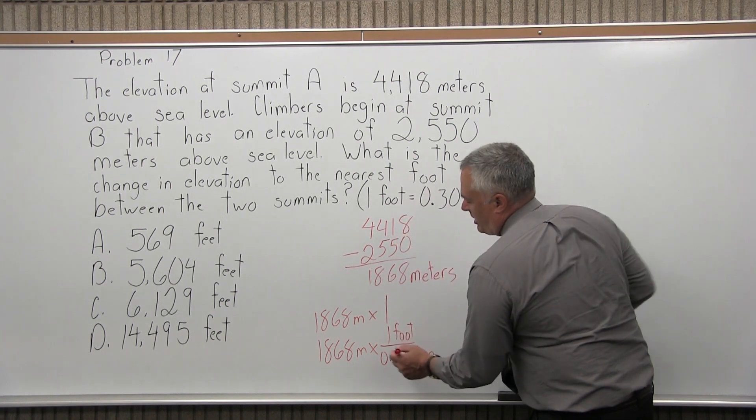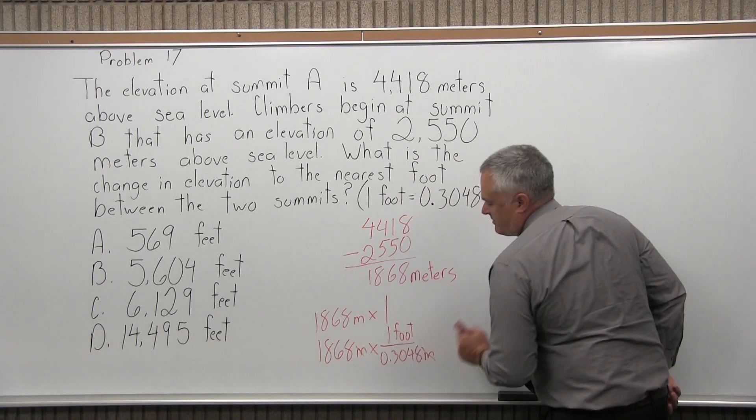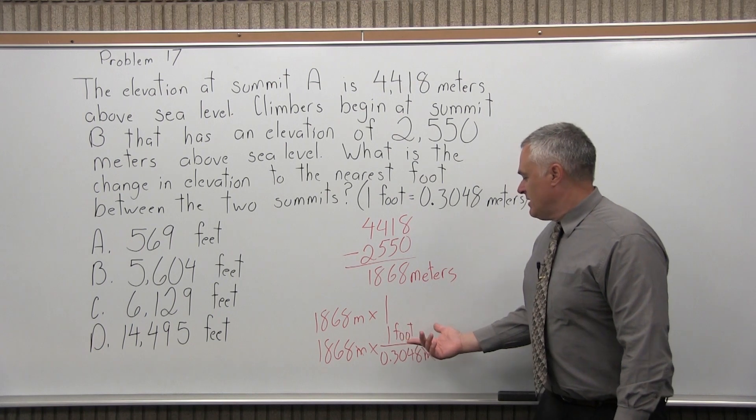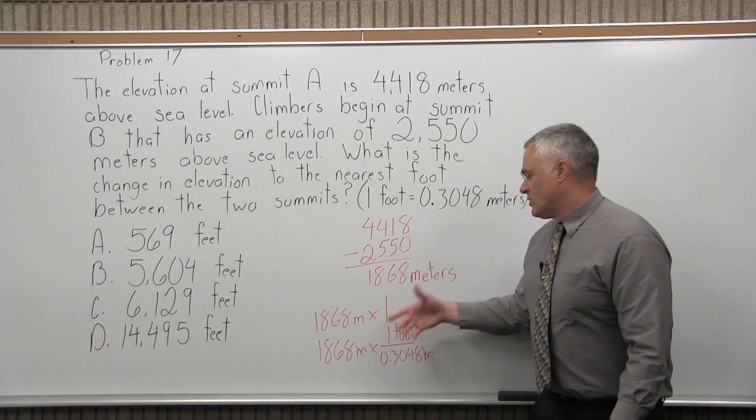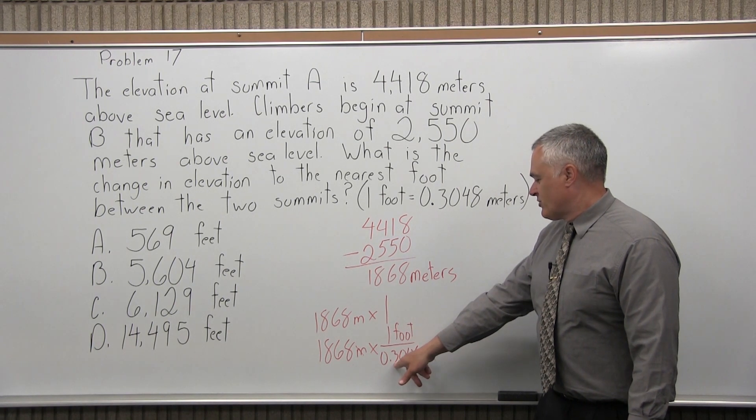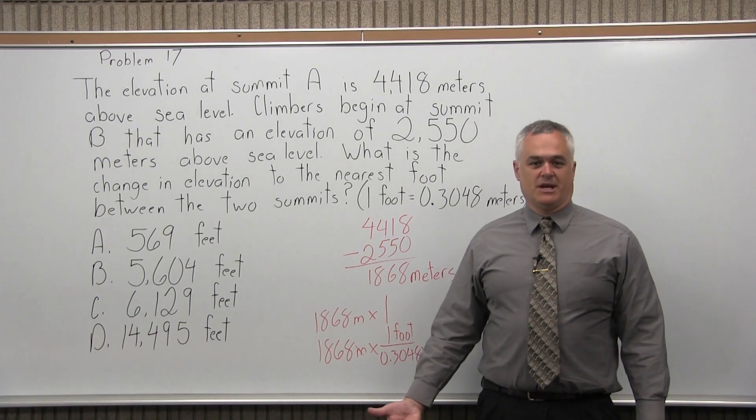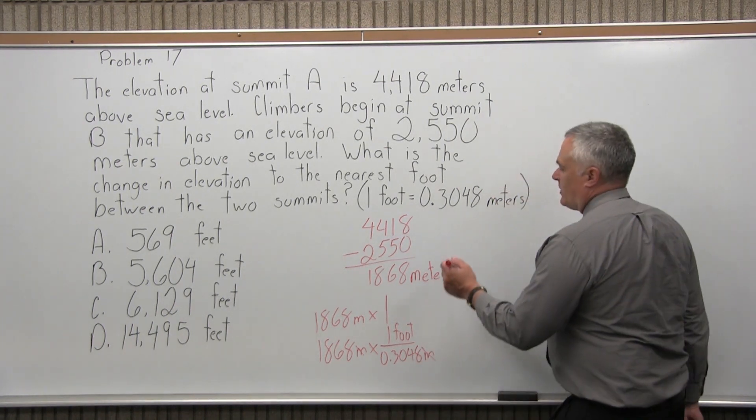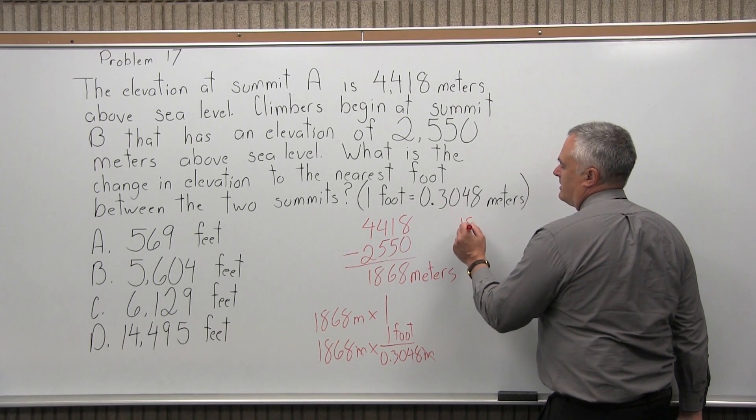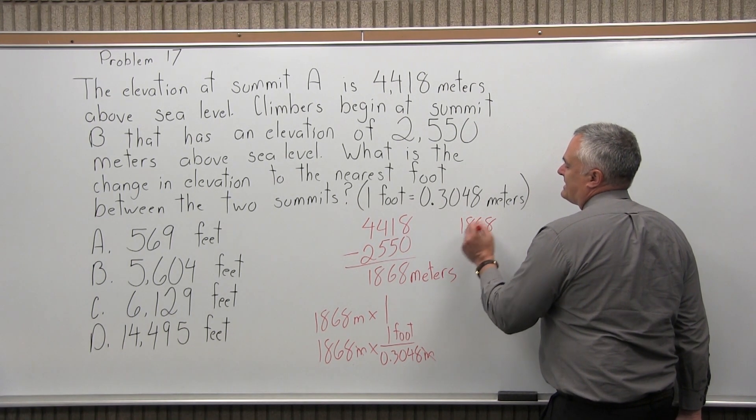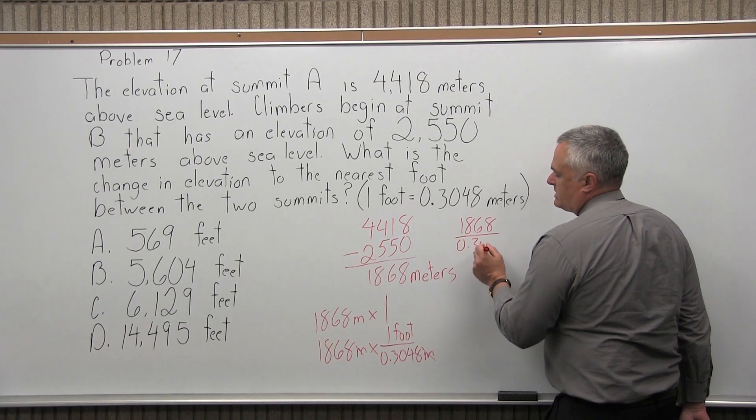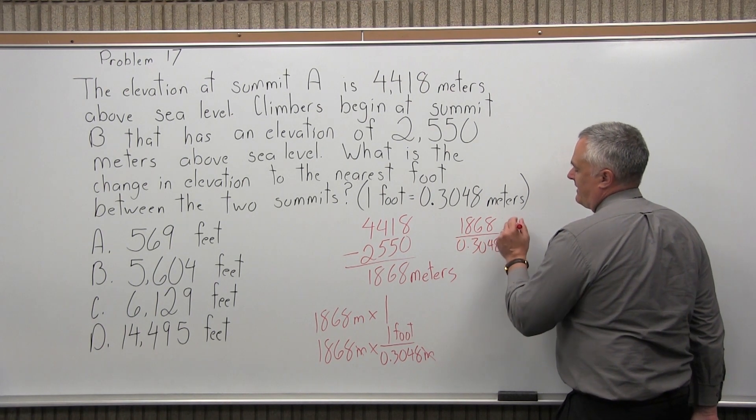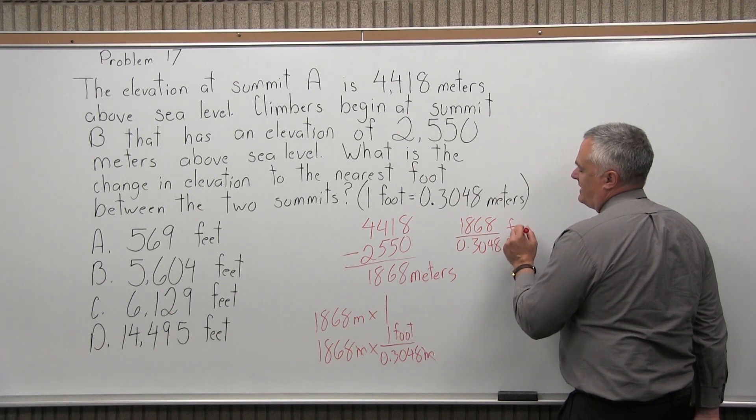Now, when I multiply, the units of meters will cancel, giving me feet. So, across the top, 1868 times one says 1868, but I have a 0.3048 in the denominator. So, what I have to do, I have 1868 over 0.3048 and that answer is going to be how many feet.